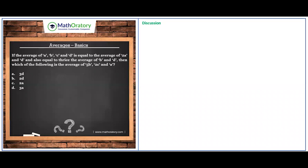So average of A, B, C, D is equal to the average of 2A and D and also equal to thrice the average of B and D. So that is the first sentence or the first part of the entire question.